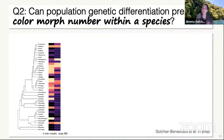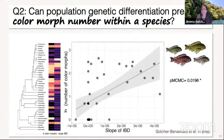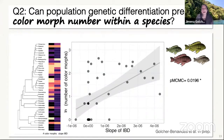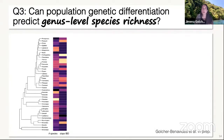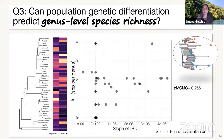Can population genetic differentiation predict the number of color morphs within a species? I took advantage of anecdotal evidence from the aquarium trade on the number of color morphs per species and their distributions within the entire lake. I found that even after accounting for phylogeny, there appears to be a positive relationship — having greater genetic differentiation or a greater slope of IBD appears to be associated with a greater number of color morphs within a lineage. This leads me to the next question: can this also result in greater genus-level species richness, or could the number of color morphs be associated with ultimately accumulating more species in each lineage? And for this we found no relationship.